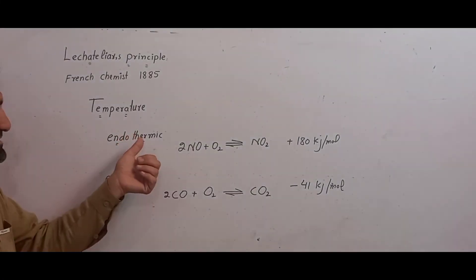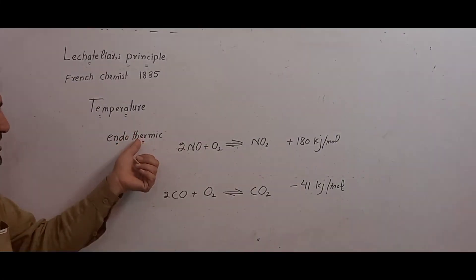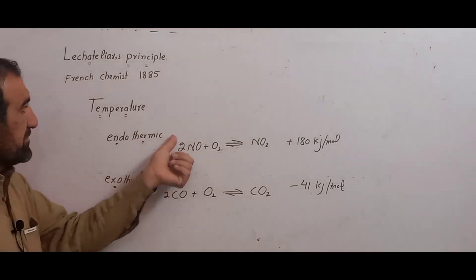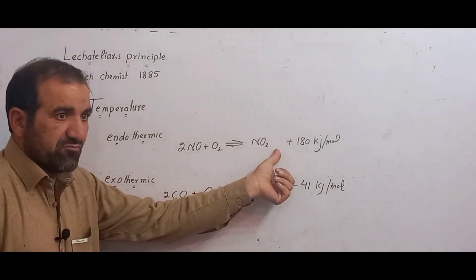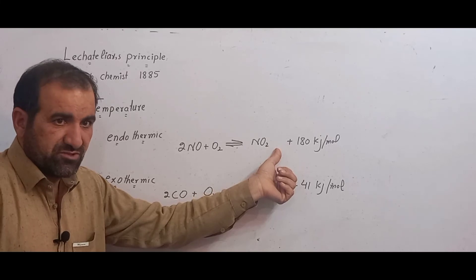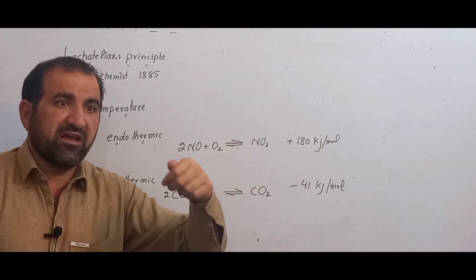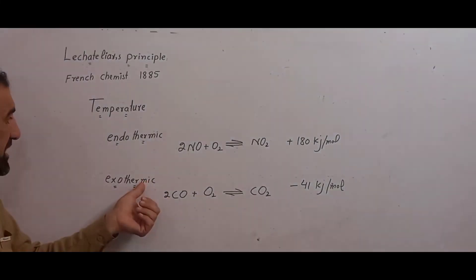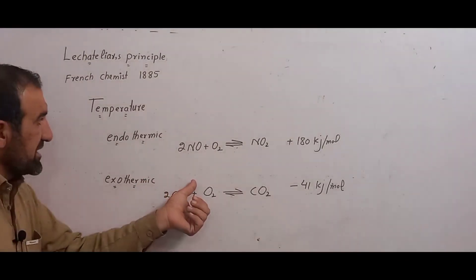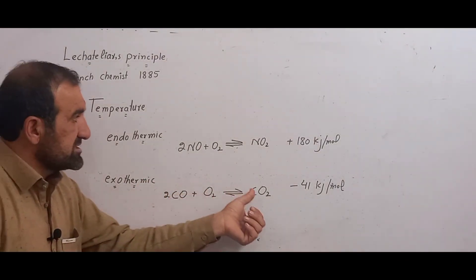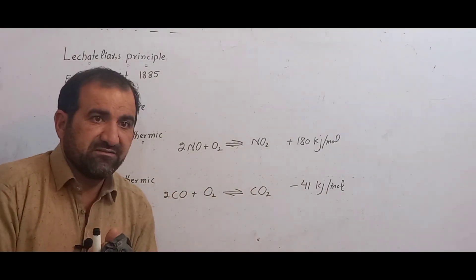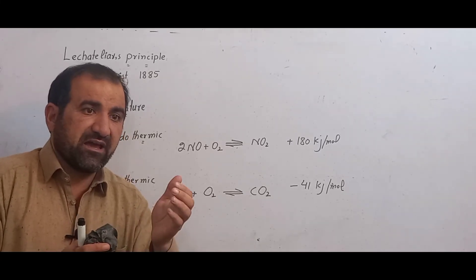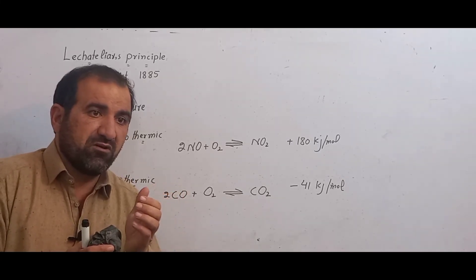When the temperature is decreased, for an endothermic reaction, the reaction will shift in the forward direction. For an exothermic reaction when temperature is decreased, the system will shift in the reverse direction to attain equilibrium.